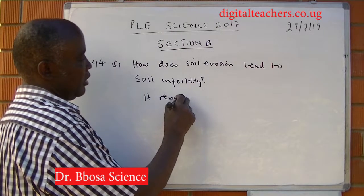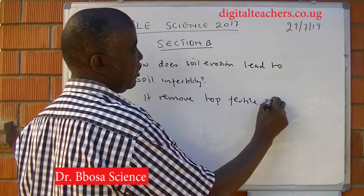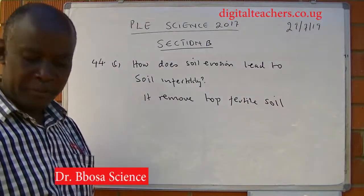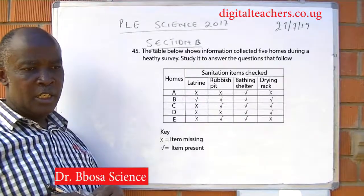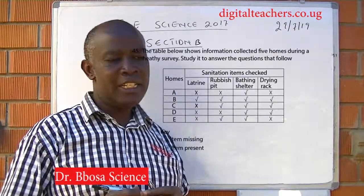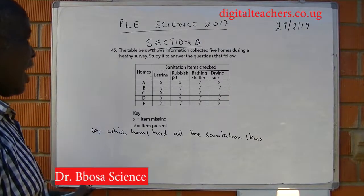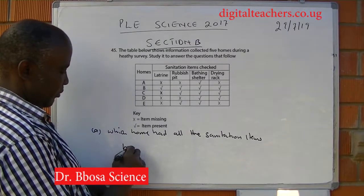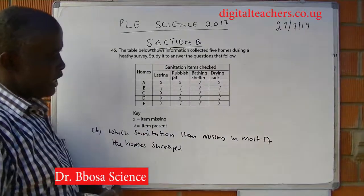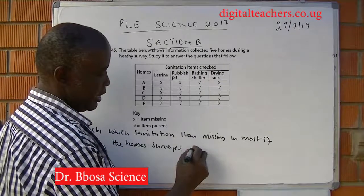Running water removes top fertile soil. Number 45: the table below shows information collected from five homes during an HDP survey. Study it and answer the questions that follow. Part A: which home had all the sanitation items? That is home B. Part B: which sanitation item is missing in most of the homes surveyed? That is a latrine.